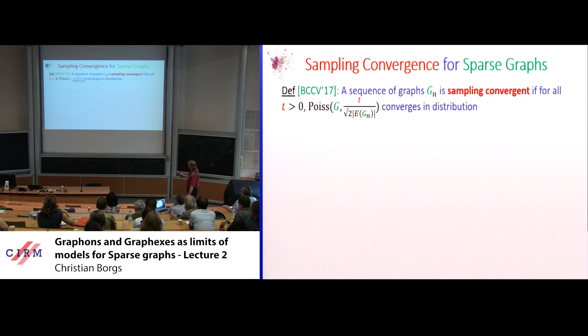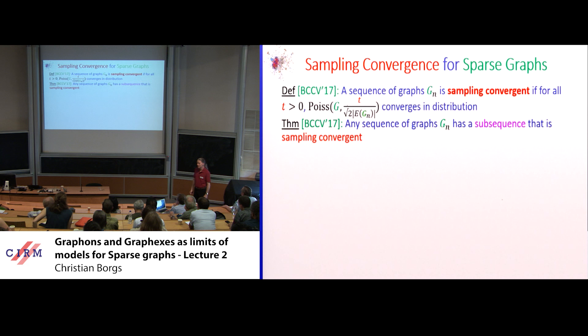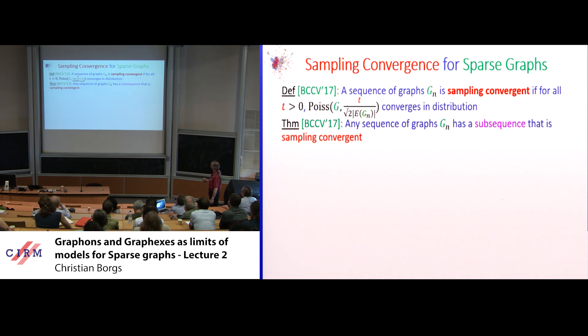Sub-sequential convergence follows automatically because the space of probability distributions over finite discrete graphs is compact. The real question is: what is the limit of this object? We proceed as before. Now we have a continuous parameter t, so instead of a sequence we have a process of unlabeled finite random graphs.